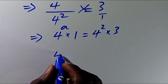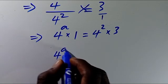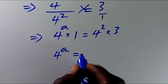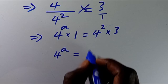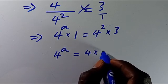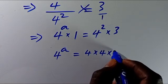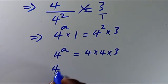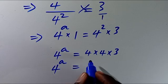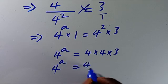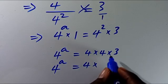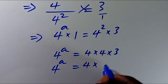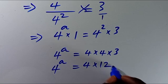So here we will have 4 to the power of a equals — we can simplify this as 4 times 4 times 3, so we have 4 to the power of a equals 4 times 12, since 4 times 3 is 12.